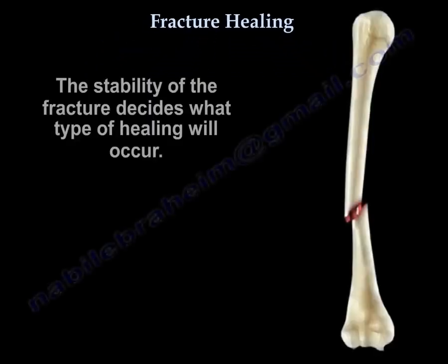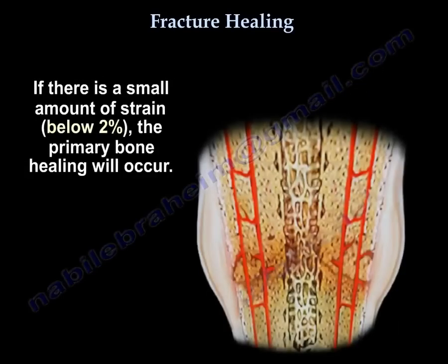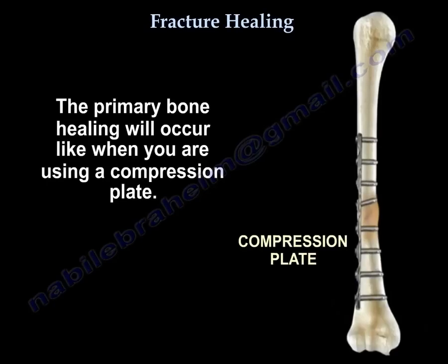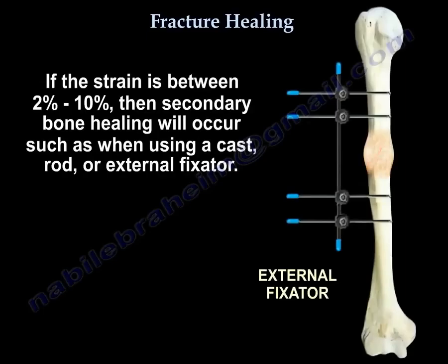Fracture healing. The stability of the fracture decides what type of healing will occur. If there is a small amount of strain, like below 2%, primary bone healing will occur, as is the case when you use a compression plate. If the strain is between 2% to 10%, then secondary bone healing will occur, such as when using a cast, rod, or external fixator.